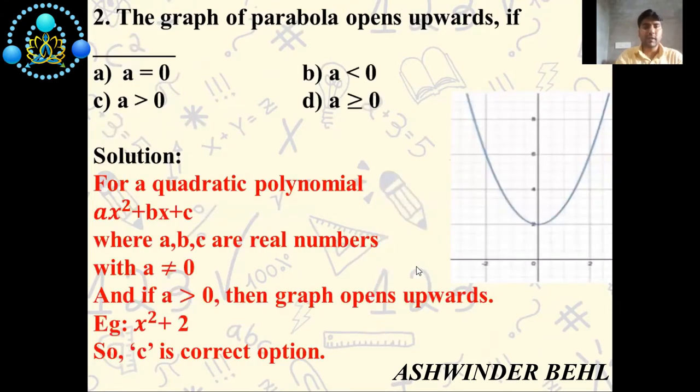Now we will discuss second question: the graph of parabola opens upward if a equals zero, a less than zero, or a greater than zero. Now we will discuss this solution. For a quadratic polynomial ax² + bx + c, where a, b, c are real numbers with a not equal to zero, if a is greater than zero, the graph opens upward.